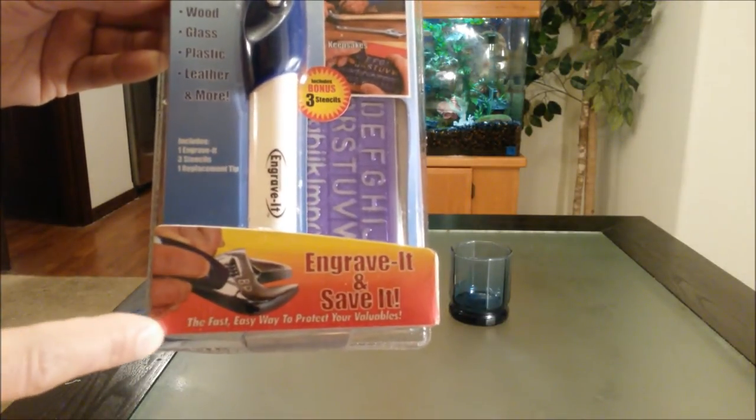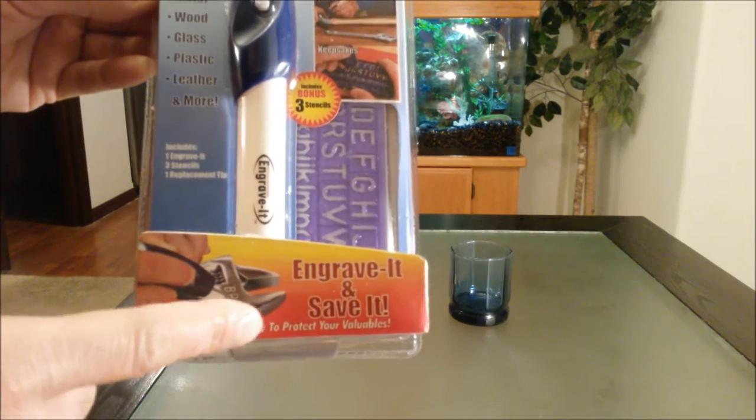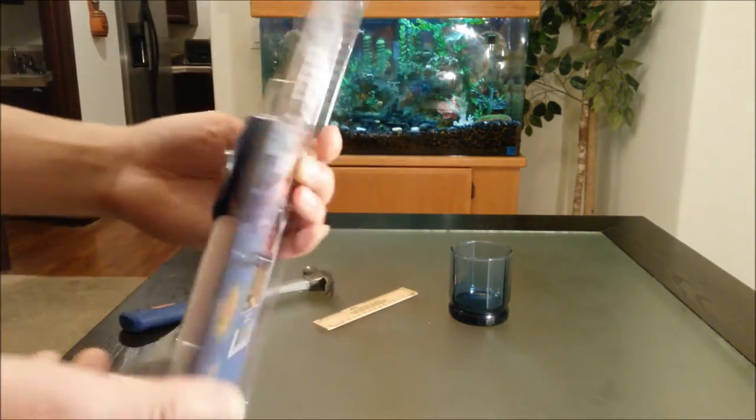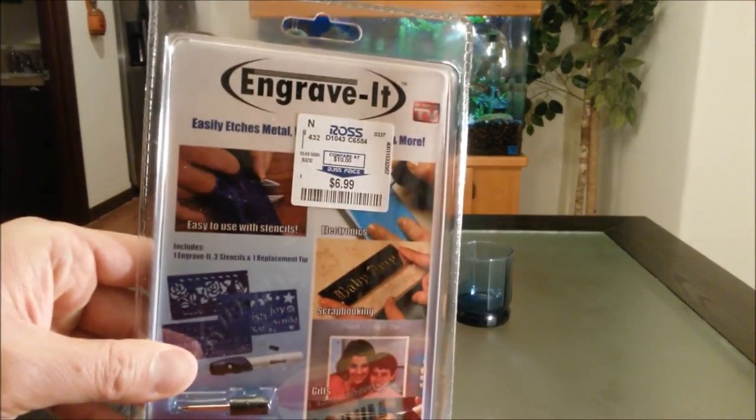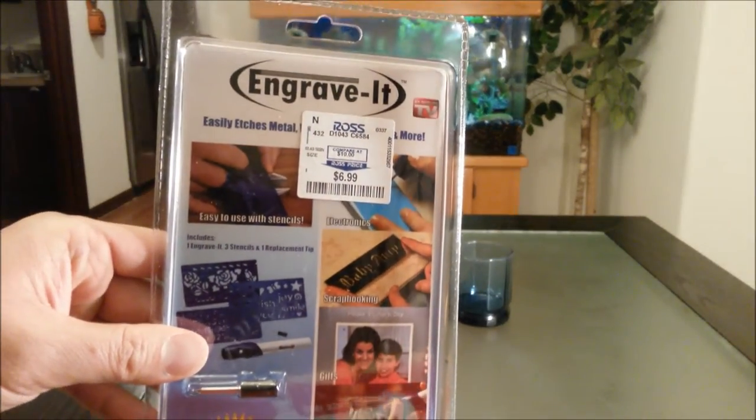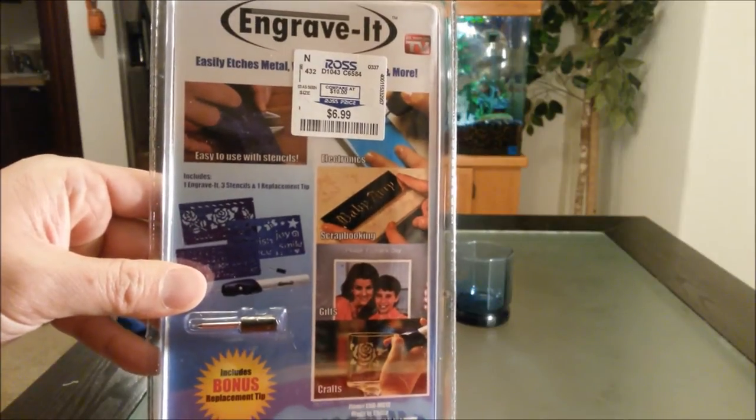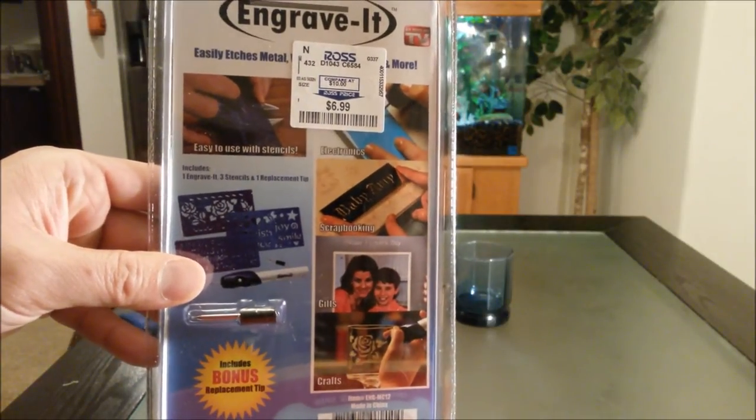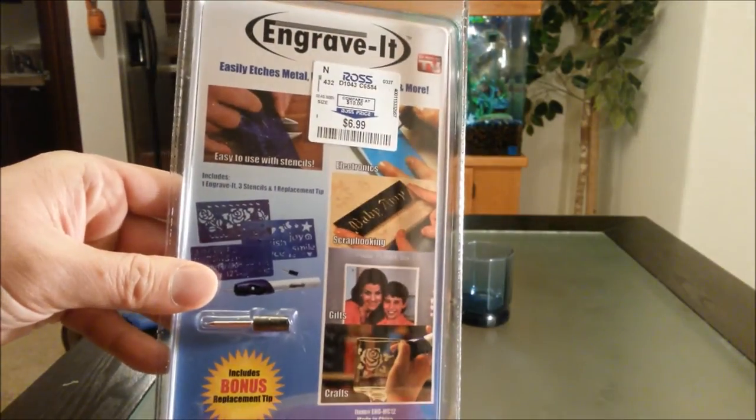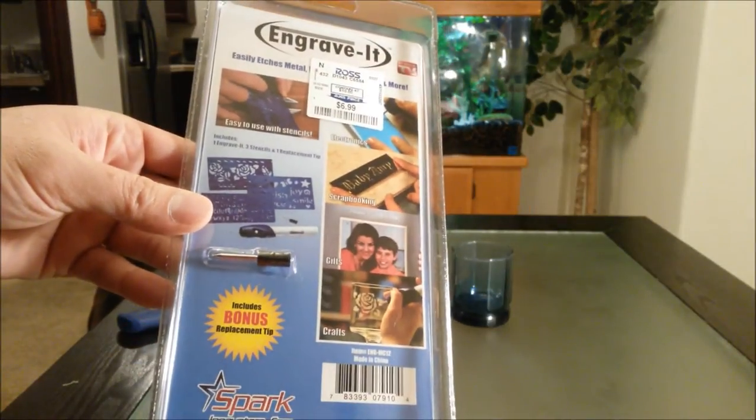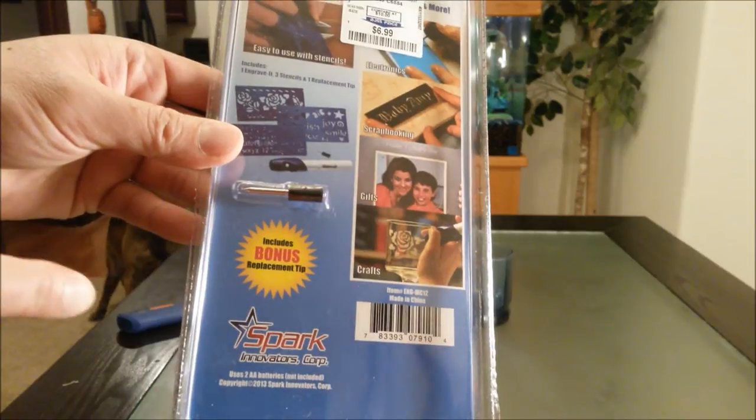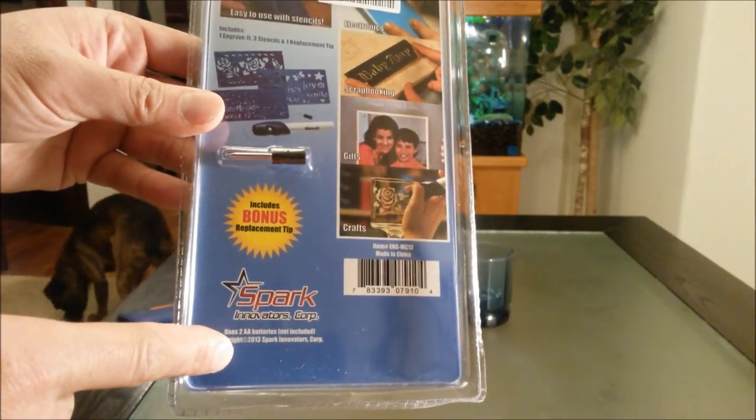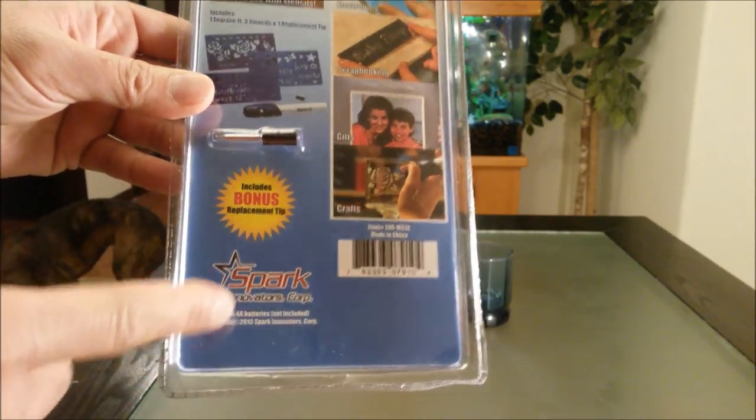Engrave it and save it - the fast, easy way to protect your valuables. Check it out, see how much I paid for it. I purchased this from my local Ross Dress for Less for only $6.99. If you check online, I think it was going for about $15 to $20 on Amazon. Here's an extra bonus tip. It will require two double A batteries.